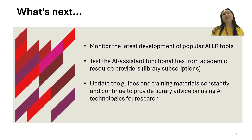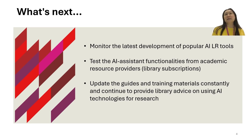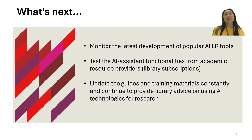As AI technologies evolve quickly, and some academic resource providers offer AI-assisted searching functionalities on their platforms — like Scopus AI — we will monitor the latest developments and update the study guides and training materials constantly. Our goal is to guide Macquarie researchers to use AI technologies to optimize their research processes in a responsible and ethical way.